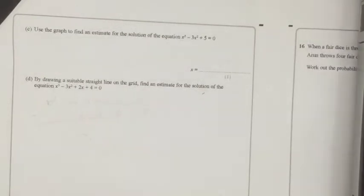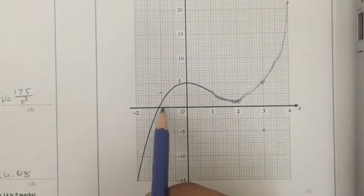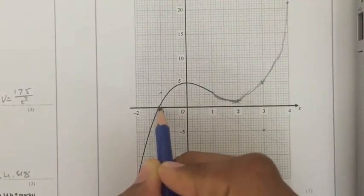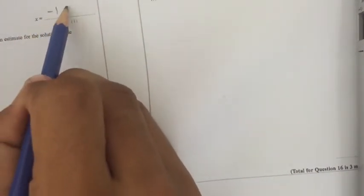Okay, so next question. Use the graph to find an estimate for the solution of the equation X cubed minus 3X squared plus 5 equals 0. Basically, what it's asking you is to find X when Y is 0. So let's just pull out the graph really quick. When Y is 0, X is here, so X is minus 1.1. So that's the answer. Minus 1.1.